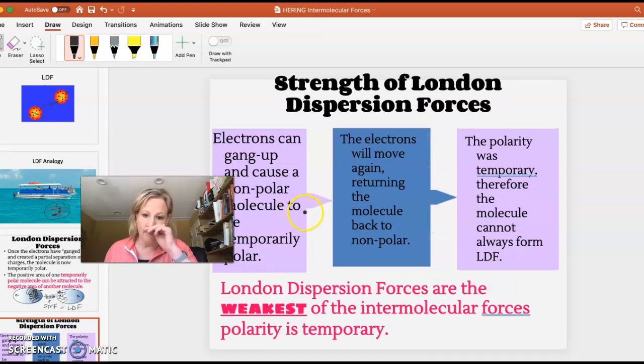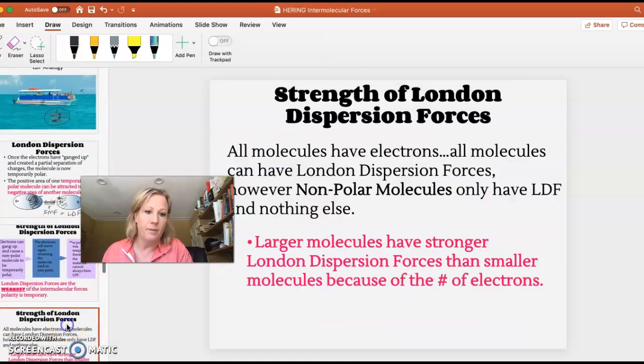It is the weakest of the types of IMF because it's a temporary dipole. The electrons don't stay permanently on one end of the molecule. They move really quickly, but if you have a larger molecule they do become more significant.